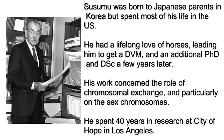Susumu was born to Japanese parents in Korea, but spent most of his life in the US. He had a lifelong love of horses, leading him to get a DVM — that's a doctor of veterinary medicine — and then an additional PhD and doctor of science a few years later. He is what I call a triple doctor. His work concerned the role of chromosomal exchange, and particularly on the sex chromosomes. He spent 40 years in research at City of Hope, a very important research hospital in Los Angeles.